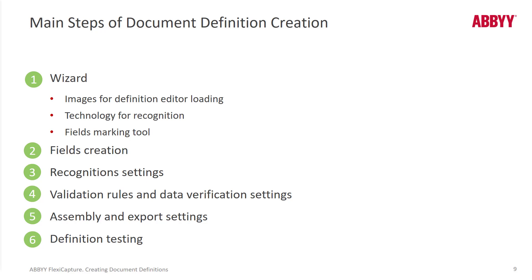Then you set up recognition settings — handprint or machine print — and there are a lot of different settings to make sure you're getting good results. Then you set up validation rules, data verification settings, maybe database lookups and format checks. Then you set up document assembly — for example, a passport is always the first page, and then we've got supporting documents after that. You can set up rules to accommodate that kind of data collection, and there's a GUI interface that allows you to do that.